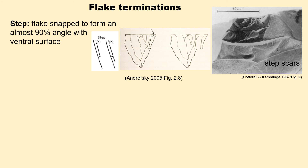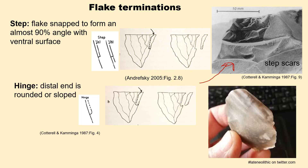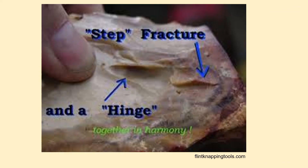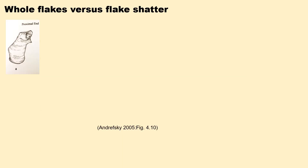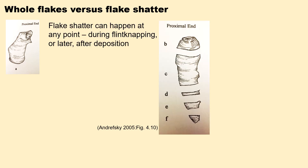In a step termination, the flake has snapped to form an almost 90-degree angle with the ventral surface. When you find this on a flake, it's difficult to tell whether it happened during flintknapping or afterwards when the flake was lying on the ground and someone stepped on it. However, when you see flake scars like this, you know that these flakes had step scars at the point of flintknapping. A hinge fracture, instead, is rounded on the end. This illustration shows both a step fracture — 90-degree angle — and a hinge fracture — rounded. Flake shatter can happen at any point, either during flintknapping when the flake breaks as you're hitting it, or later after deposition.